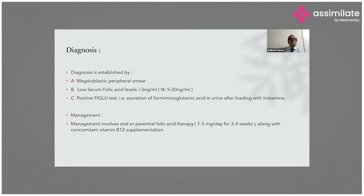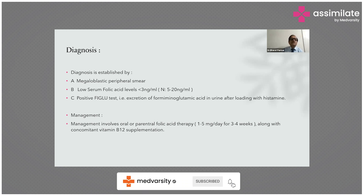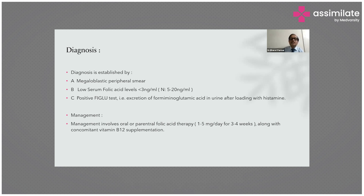Diagnosis of folic acid deficiency is established by megaloblastic peripheral smear, low serum folic acid level less than 3 nanogram per ml (normally 5 to 20 nanogram per ml), and a positive FIGLU test — excretion of forminoglutamic acid in urine after a loading dose with histidine. Management involves oral and parenteral folic acid therapy: 1 to 5 mg per day for 3 to 4 weeks along with concomitant vitamin B12 supplementation.